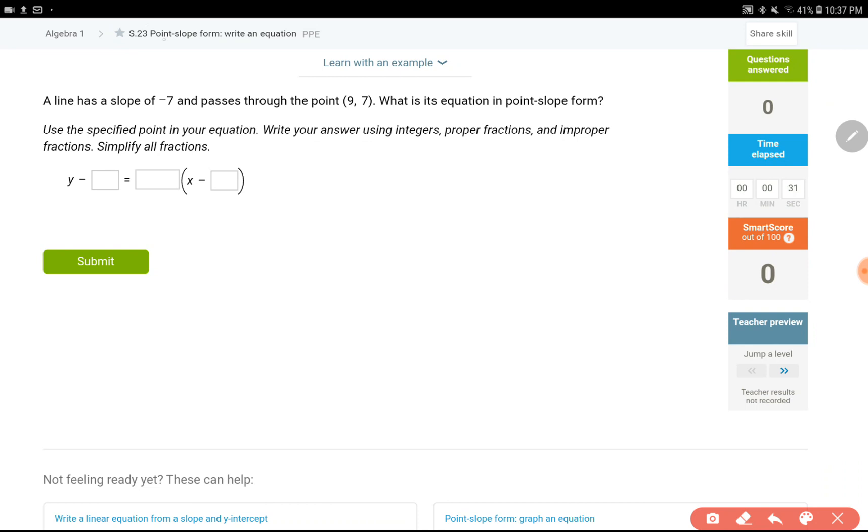It's about writing a point slope form when the slope and a point on the line is given. It's pretty simple, it's all about knowing what a point slope form looks like. So here it is.